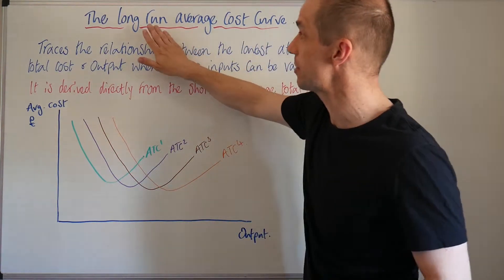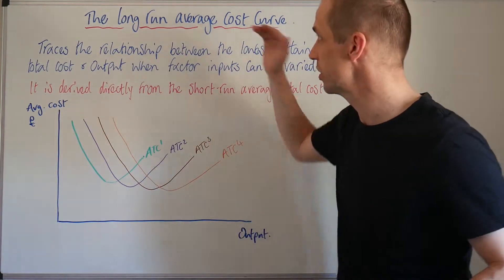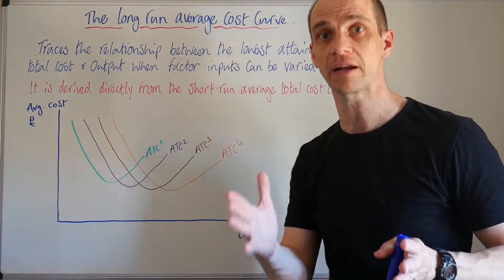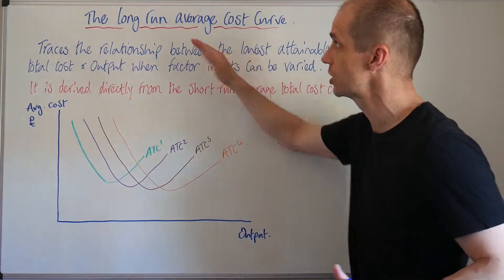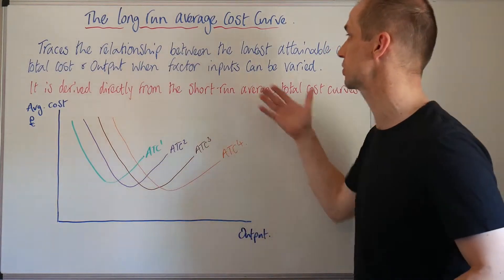Now remember we said there's an important distinction between the long run and the short run. Within the short run, at least one factor of production is fixed. In the long run, all factor inputs are variable.